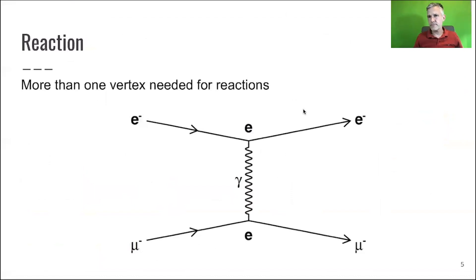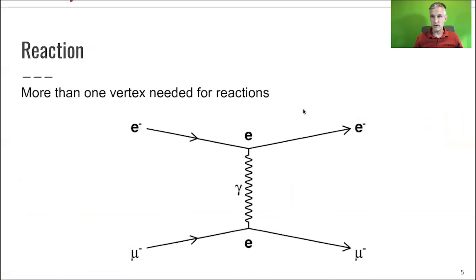So now, if you want to calculate a reaction, it's not sufficient to just use one vertex. Why? Because a single vertex will not be able to give us a reaction. You can simply see this when you look at something like an electron plus electron to photon. This is not really possible because of energy and momentum conservation in this diagram.